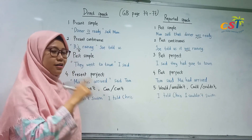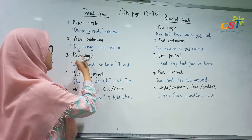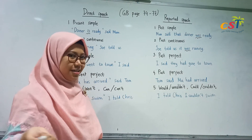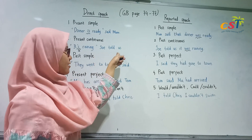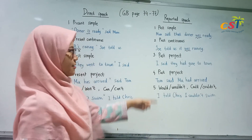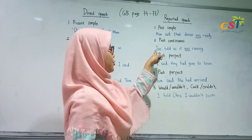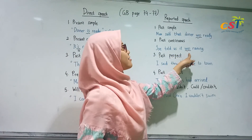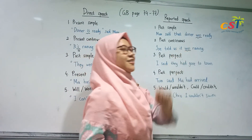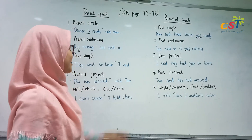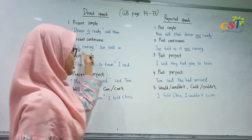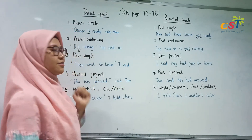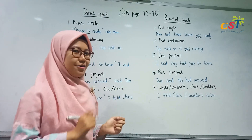What if the to-be is 'are'? For example: 'They are studying. Joe told us...' We can make it into 'Joe told us they were studying.' So, if the to-be is 'is,' change it into 'was.' But if you use 'are,' change it into 'were.'